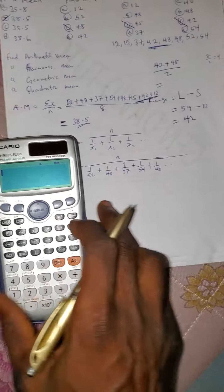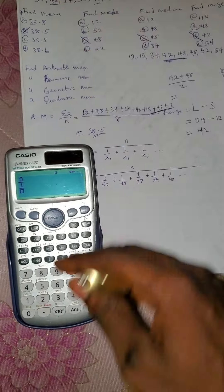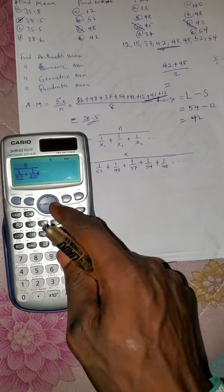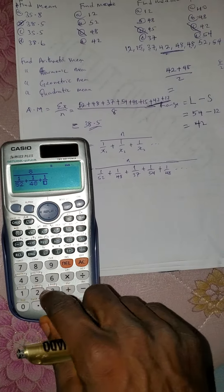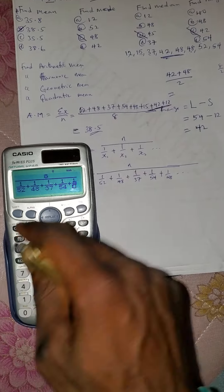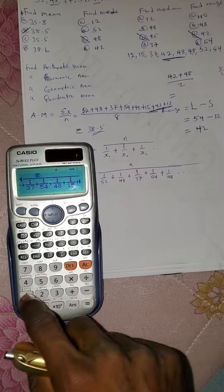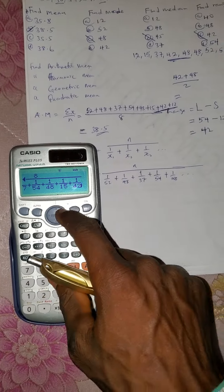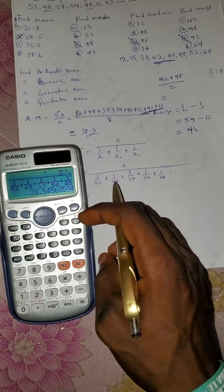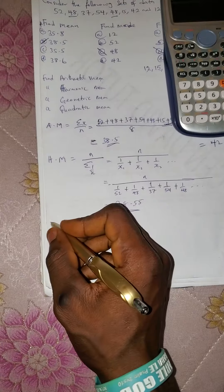On the calculator, press the fraction button. The numerator is 8. Then in the denominator, enter: 1/52 + 1/48 + 1/37 + 1/54 + 1/48 + 1/15 + 1/42 + 1/12. Press equals. The answer for the harmonic mean is 28.55.